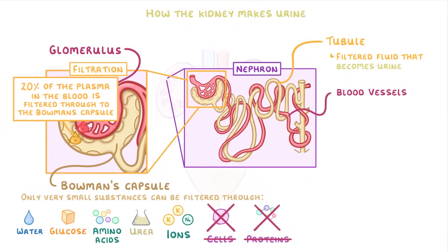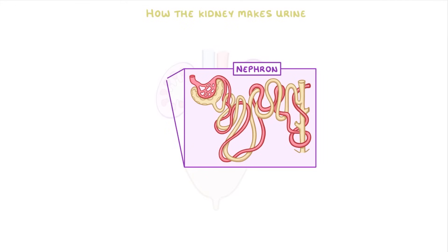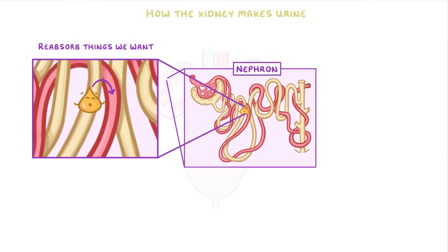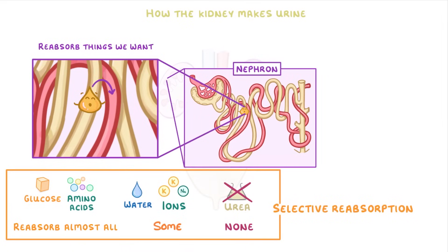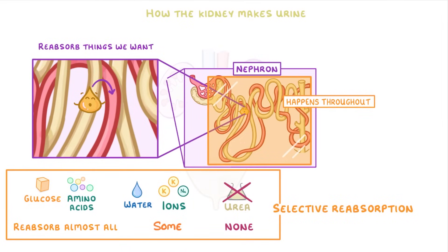Now that they've filtered out a bit of everything, the fluid passes along the tubules, and the kidneys reabsorb all the things that they want back into the blood vessels. For example, because glucose and amino acids are so useful, we reabsorb almost all of them, whereas we only reabsorb some of the water and ions, and reabsorb none of the urea. Because we're selectively reabsorbing only those bits that we want, we call this process selective reabsorption. And remember that it happens throughout this entire region, as the fluid makes its way through the tubule.